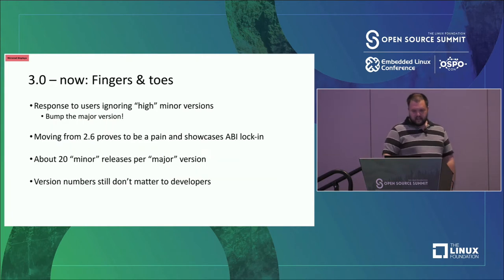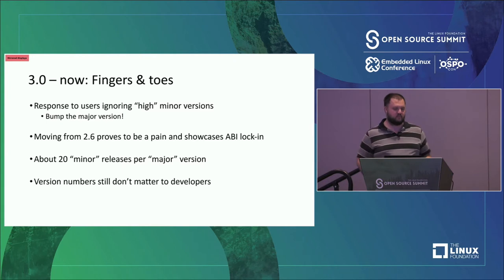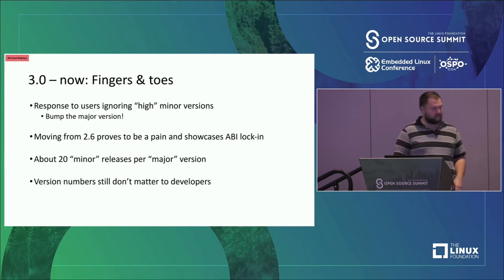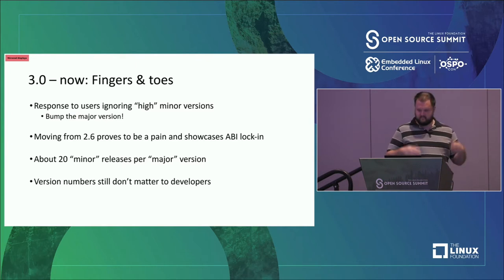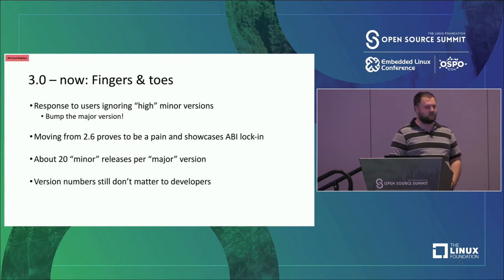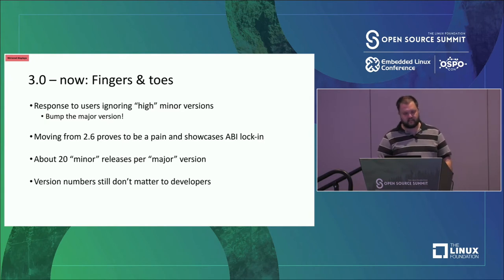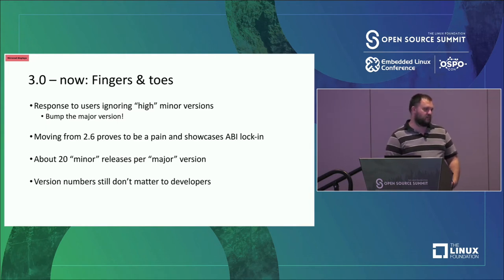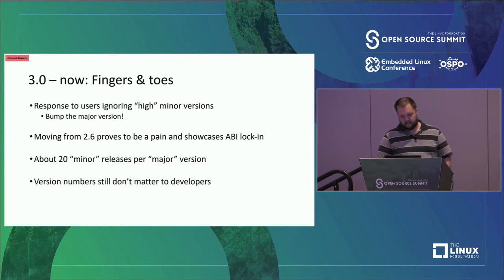To address that problem, we said we're going to go to 3.0 — high minor version numbers prevent customers from upgrading, so we'll insert the sense that every version is important. We started bumping the major version number. I call this the 'fingers and toes' part of the release process because Linus claims he can do 20 releases per major version — he can count them on his fingers and toes. It's completely meaningless; it goes up to 20 just because of an arbitrary decision.